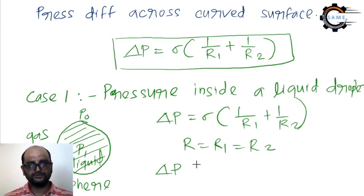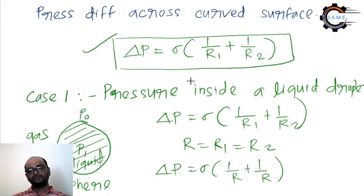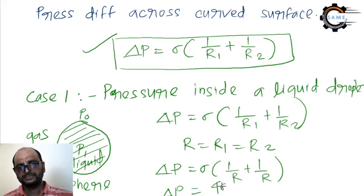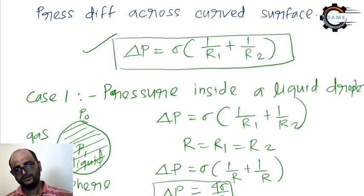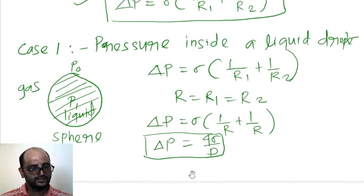So if I put R1 = R2 = R, I get ΔP = σ(1/R + 1/R). Simplifying this, you will get ΔP = 4σ/D, where D is the diameter. This formula you have to remember — in the spherical case R1 = R2, so you substitute accordingly.